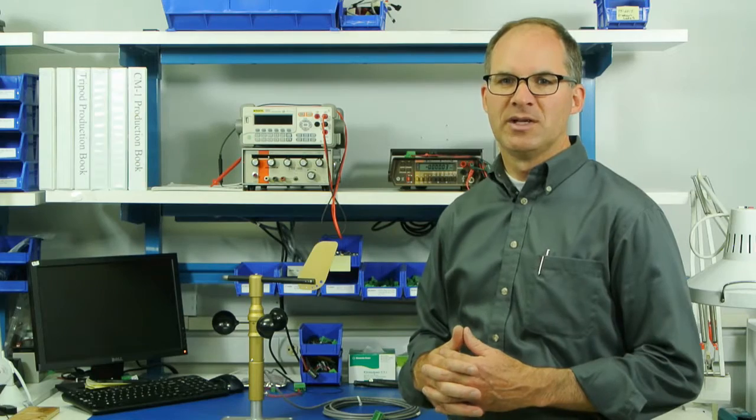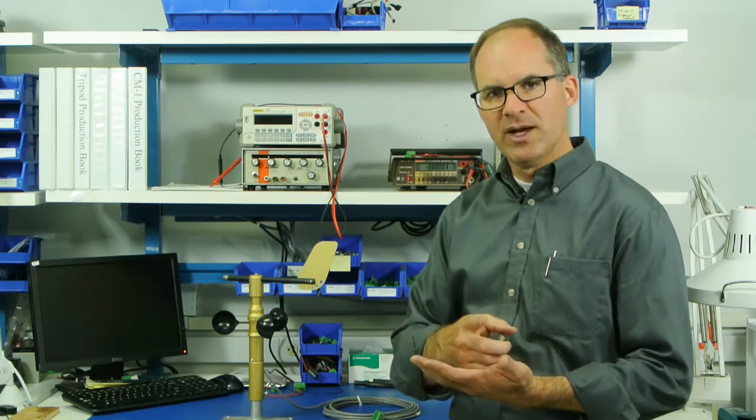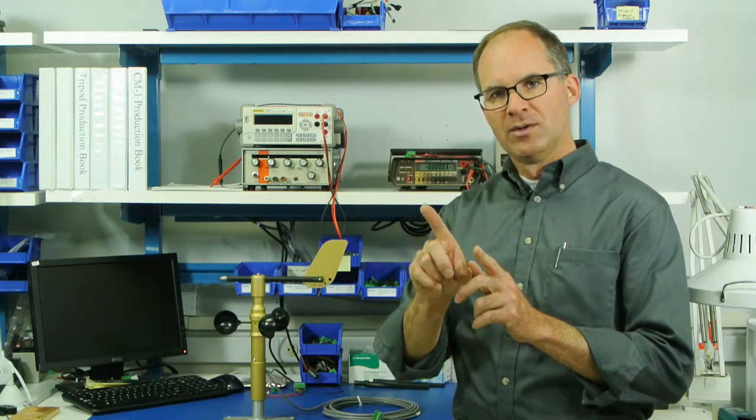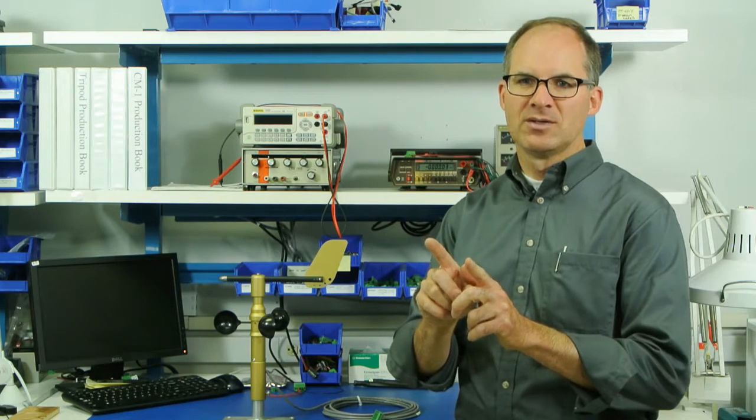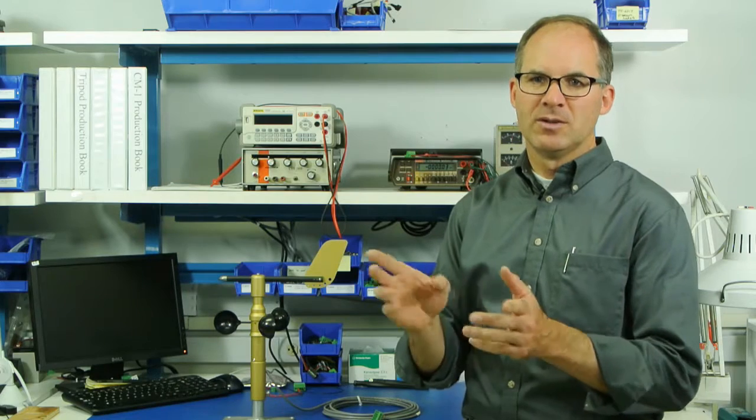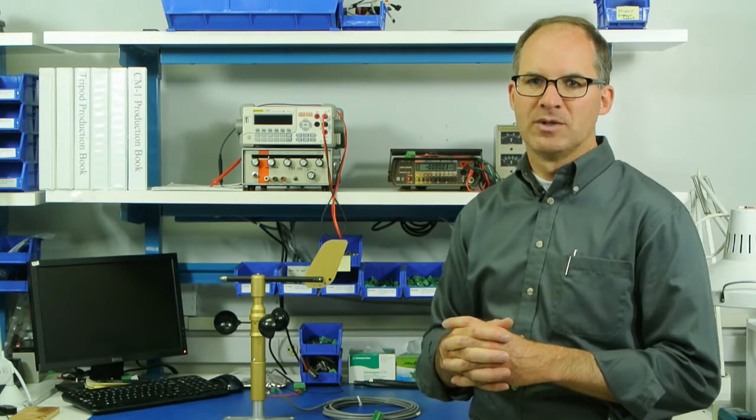Most wind direction sensors use a potentiometer. Potentiometers consist of a resistive band that starts at a low resistance and goes to a high resistance. So by measuring the value of that resistance, the instrument knows what direction the wind is blowing. The drawback to that is you have a transition from the low resistance to the high resistance. So all wind sensors that use a potentiometer have a dead zone. That dead zone can vary from a few degrees to up to 5 degrees, depending on the sophistication of the potentiometer that's used.